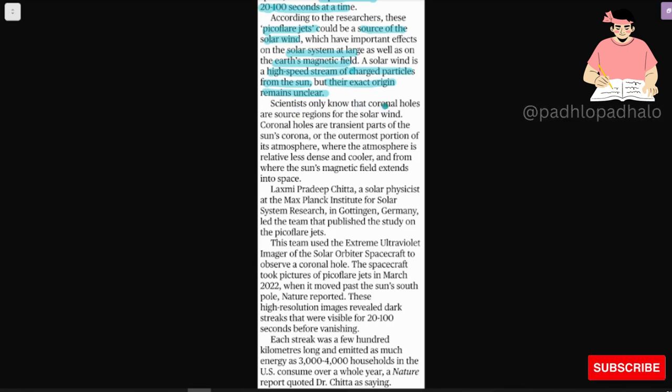Scientists only know that coronal holes are source regions for the solar winds. Coronal holes are transient parts of the sun's corona, or the outermost portion in its atmosphere, where the atmosphere is relatively less dense and cooler and formed where the sun's magnetic field extends into space.